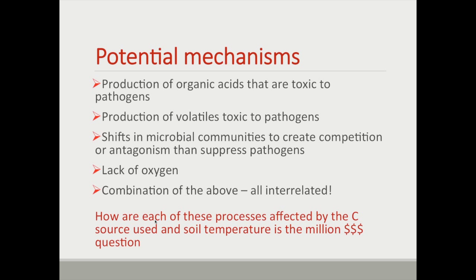On mechanisms of action: the main ways ASD is thought to work are through the production of organic acids as a byproduct of anaerobic respiration, production of volatile compounds — both of which can be toxic to different pathogens — and shifts in microbial communities in response to anaerobic conditions that create a more competitive or antagonistic environment. Almost likely some combination of all of the above. The million-dollar question is how each of these processes is affected by the type of carbon source used and the soil temperature.